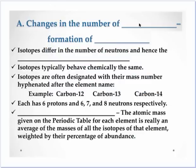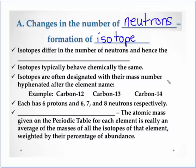We're going to start with the neutron. Changes in the number of neutrons results in the formation of what we call isotopes. Iso means same, so these are called isotopes.